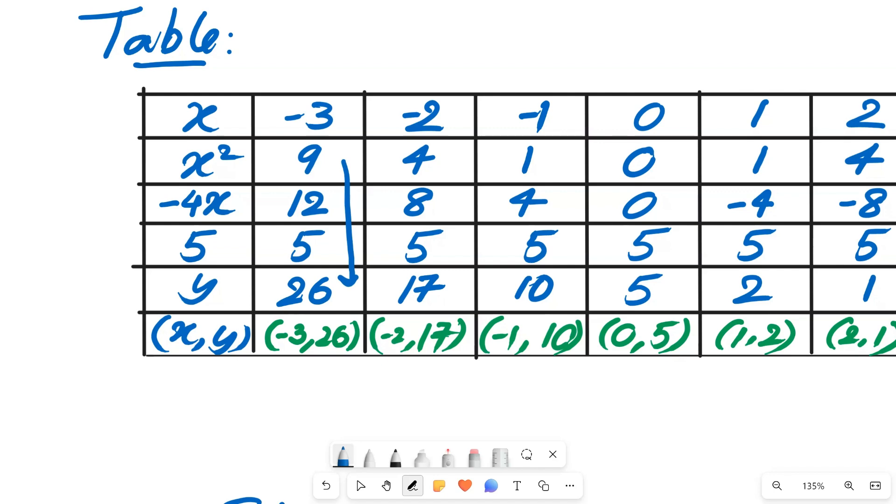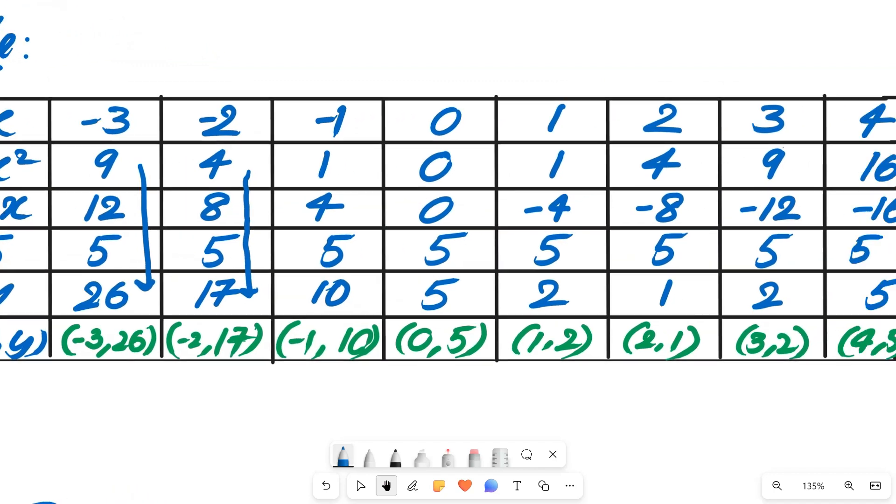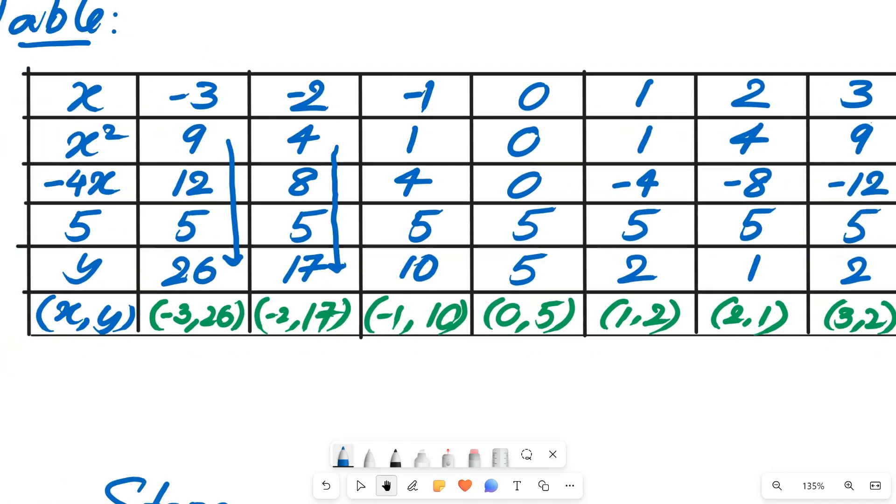So for a value of x = -3, value of y is equal to 26. So the point will be (-3, 26). Another example: if we take x = -2, x² will be 4, -4 × -2 will be 8, and if we add 4 + 8 + 5 we would get 17. So for value of x = -2, value of y is 17. So second point is (-2, 17) and so on. If I draw the table till x = 5 we get different points.